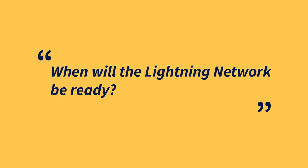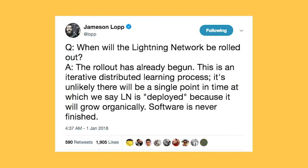The last topic is when will the Lightning Network be ready? Developers are already testing it on the Bitcoin mainnet, but as Jameson Lopp put it: the rollout has already begun — this is an iterative distributed learning process. It's unlikely there will be a single point in time at which we say the Lightning Network is deployed because it will grow organically. Software is never finished. One thing is certain though: 2018 is going to be an exciting year for the Lightning Network. That wraps up this episode. Tune in next time for a look at what the Lightning Network means for the cryptocurrency ecosystem as a whole, covering scalability, privacy, interoperability, and the ability to stream money. Thanks for joining us.